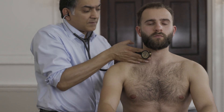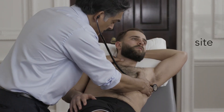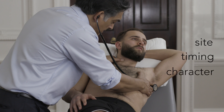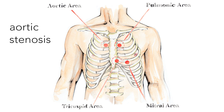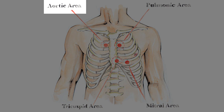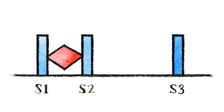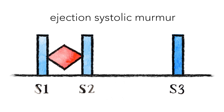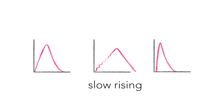Auscultate over the carotid pulse and the axilla for radiation of murmurs. The site, timing, character, pitch and radiation of the murmur give important clues as to the nature of the valvular pathology. Aortic stenosis is best heard in the aortic area in the second intercostal space at the right sternal edge. It is a harsh, high-pitched ejection systolic murmur that radiates to the carotids and is associated with a slow rising pulse.